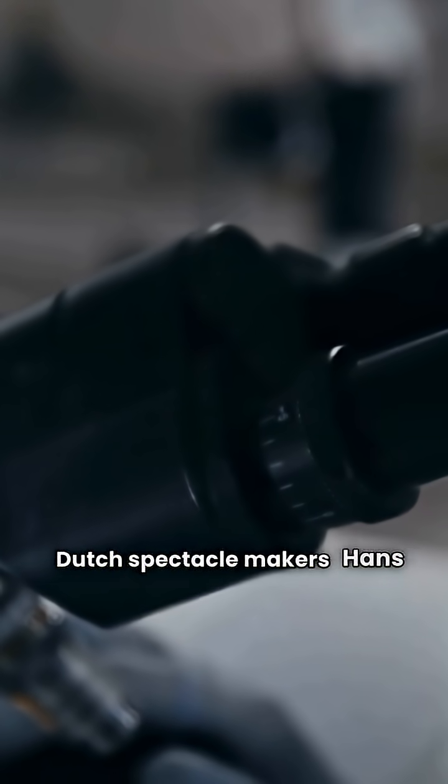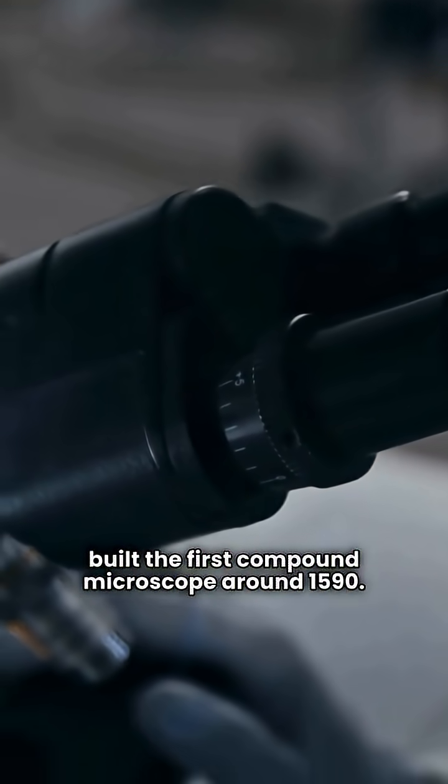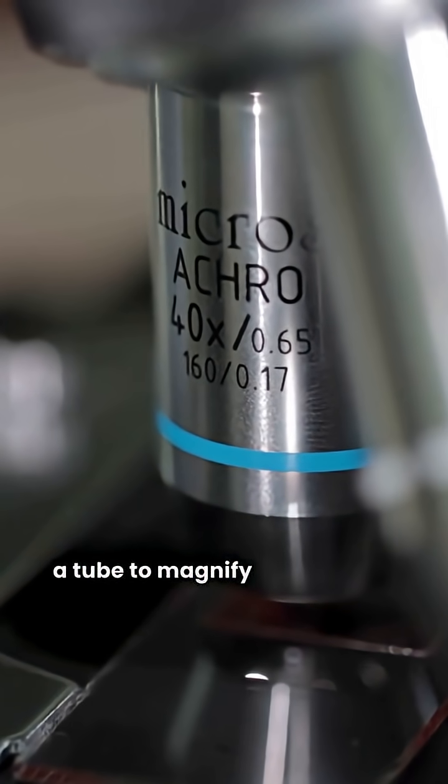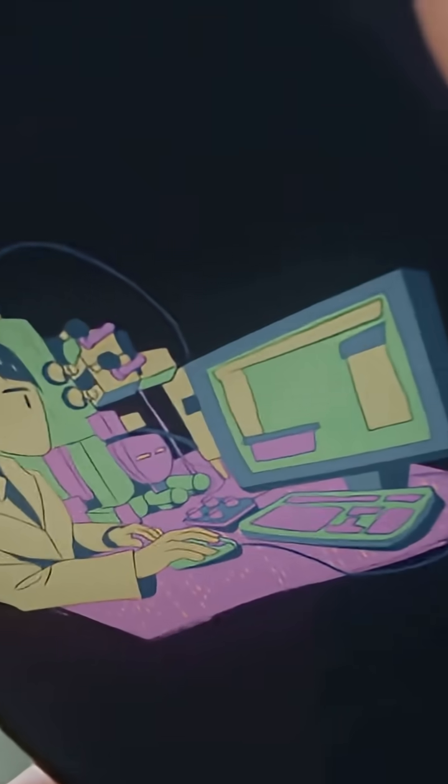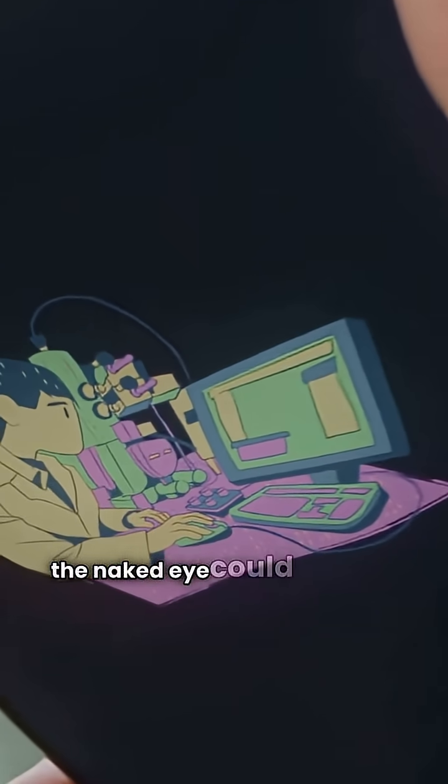Dutch spectacle makers Hans and Zacharias Janssen built the first compound microscope around 1590. They used a series of lenses in a tube to magnify tiny objects. This allowed scientists to explore details that the naked eye could never see.